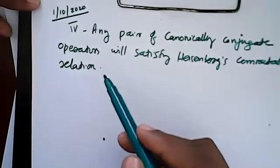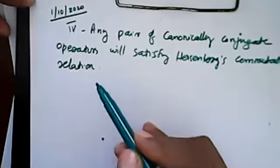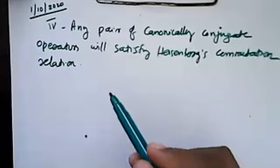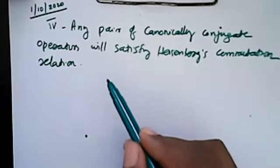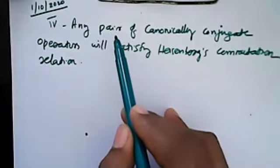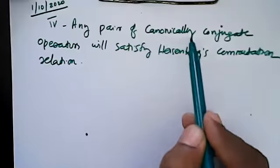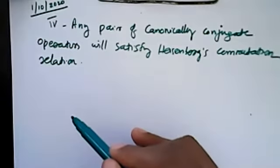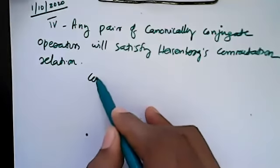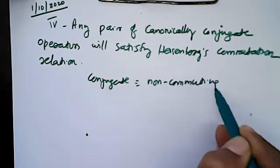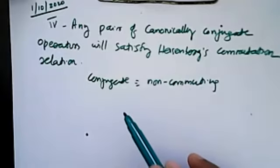This is the most important postulate — it is called the kernel of quantum mechanics. Canonically conjugate means these are the fundamental, unquestionable laws. Conjugate means non-commuting or anti-commuting. Canonically means you should not question these — they are fully accepted.